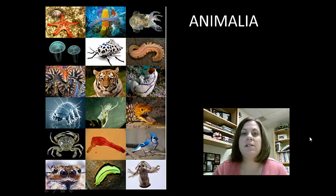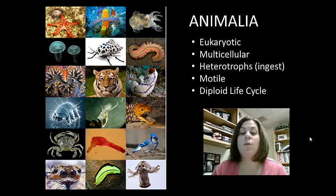Welcome back. We're going to continue to discuss Kingdom Animalia. We're going to focus in this lecture on the vertebrates. In the last lecture, we talked about basic characteristics that all animals have. Remember that animals are eukaryotic, meaning their cells have a nucleus. They're multicellular, they're heterotrophs, they're motile, and they display a diploid life cycle.